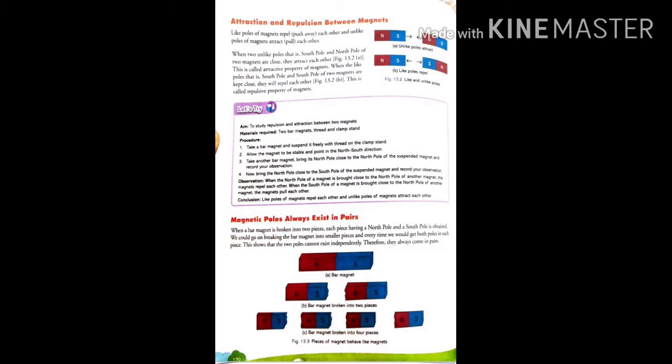Now we will study an activity to observe repulsion and attraction between two magnets. For this we require two bar magnets, thread, and a clamp stand. We take a bar magnet and suspend it freely with a thread on a clamp stand, and allow the magnet to be stable and point in north-south direction. Then we take another magnet and bring its north pole towards the north pole of the suspended magnet. What happens? You will see that they will repel each other. When we bring the north pole close to the south pole of the suspended magnet, we will see they attract each other. This shows that like poles of magnets repel each other and unlike poles of magnets attract each other.